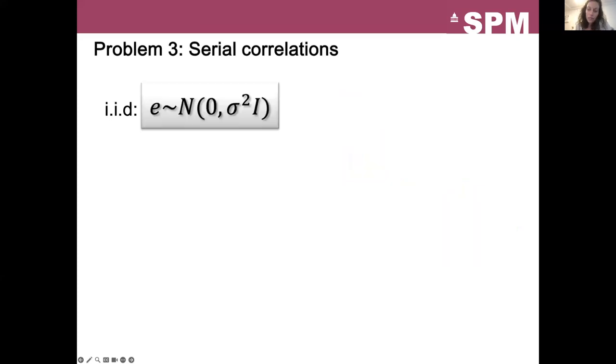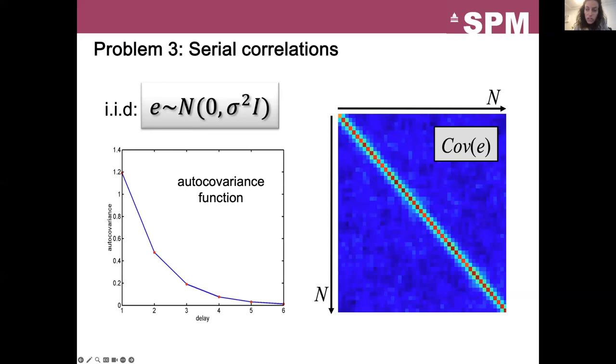The last issue was about the error term. Our assumption about independent error time series is most of the time wrong. Each time point is related to the previous one, such that the auto covariance function and the covariance matrix have this shape. So it's not the identity matrix. This effect increases when the TR is getting smaller. So there is temporal correlation. This temporal correlation must be taken into account, given that more and more highly accelerated sequences are used.